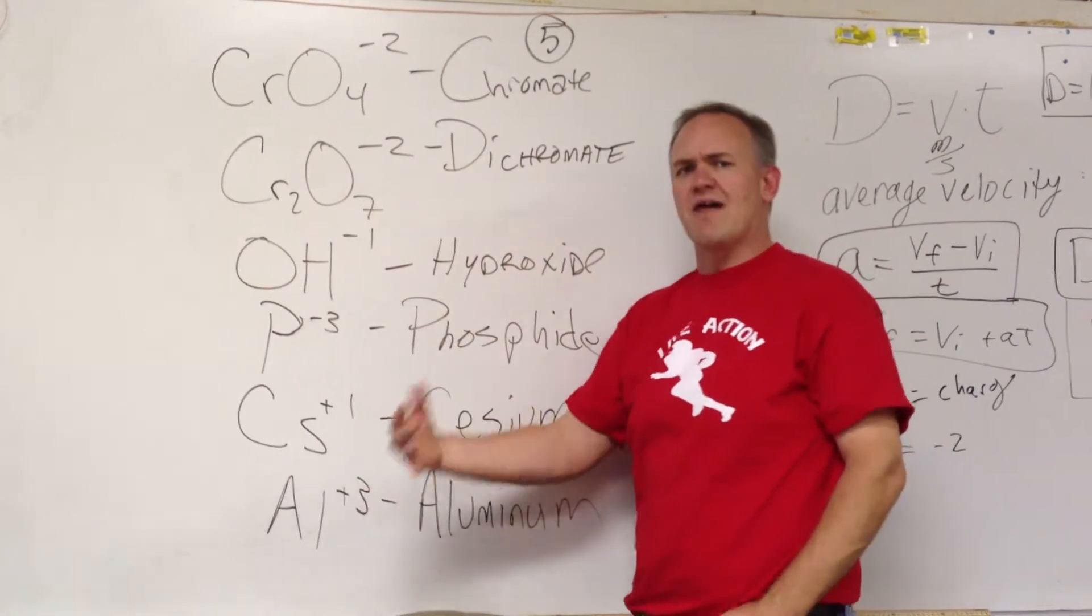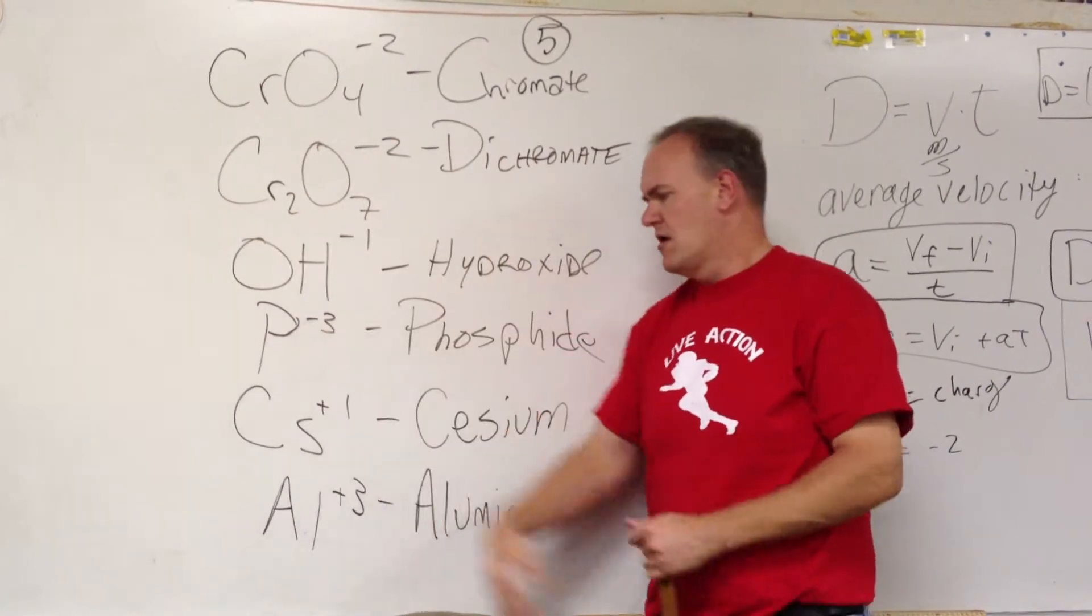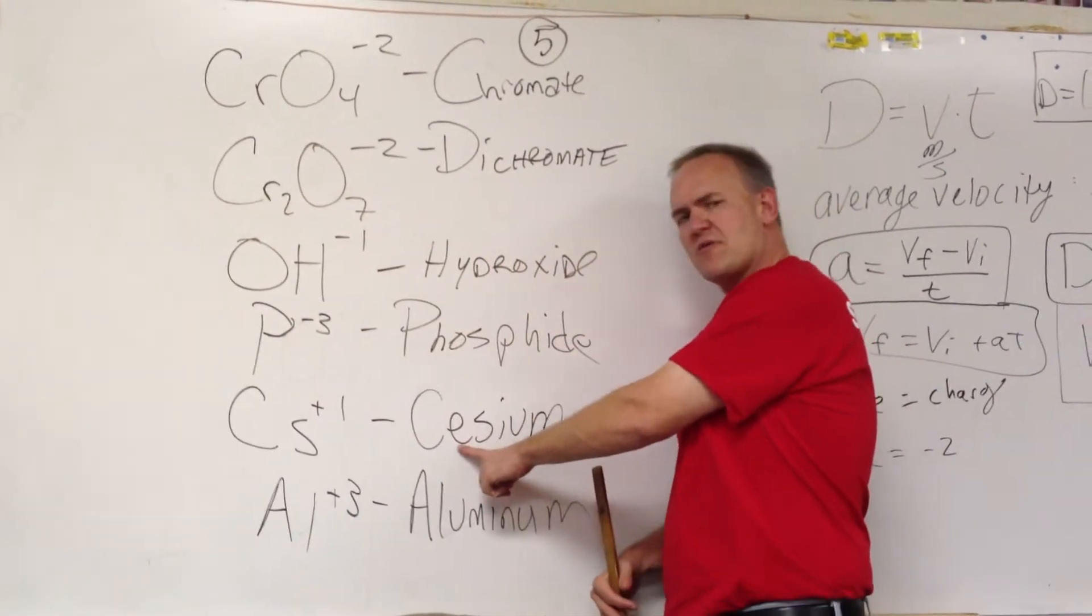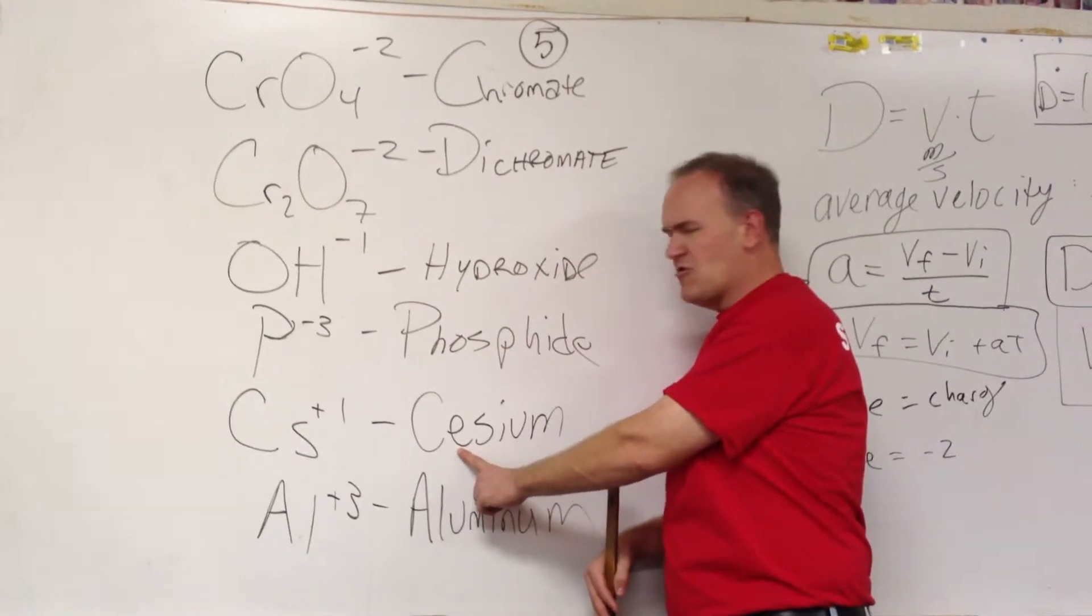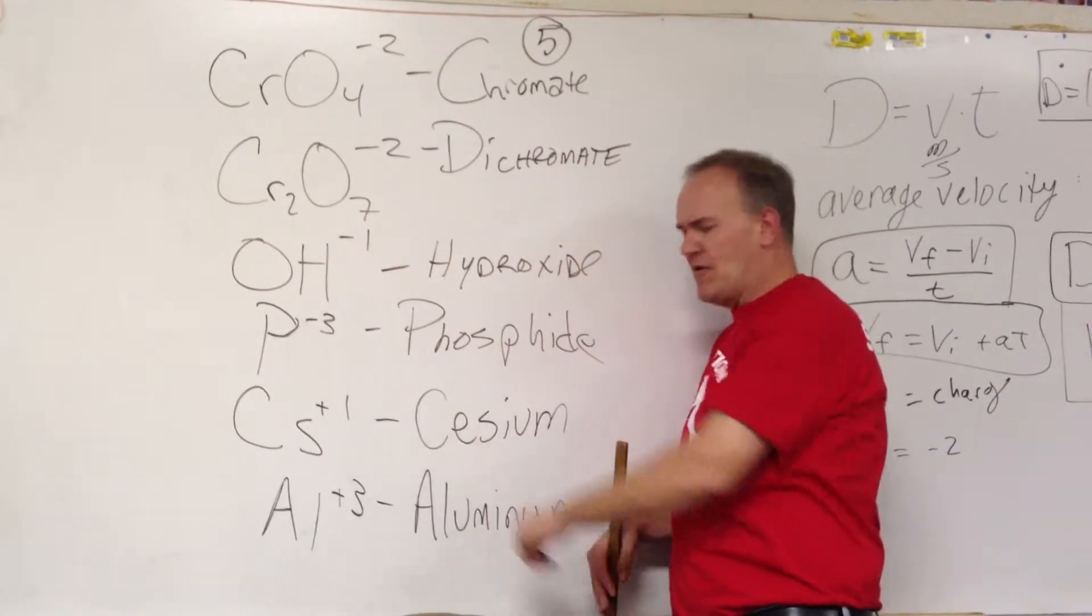Cesium, plus 1, an alkali metal, first column. You'll probably do okay on that one. Just remember your periodic table is European, so they have that A in there. We don't want the A.